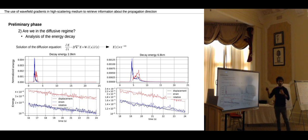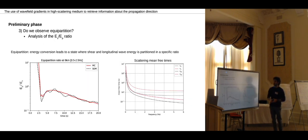Then we looked at energy decay. We know that if we look at late coda, we are expecting to see a certain decay. In this case also, we see that. I just put an example at two kilometers and 6.8 kilometers from the source.